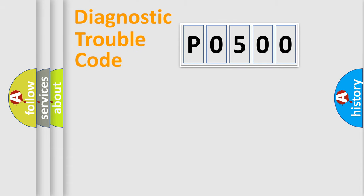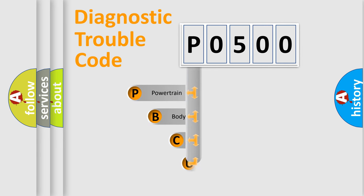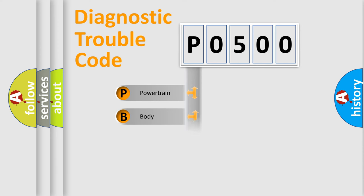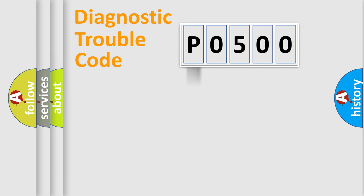First, let's look at the history of diagnostic fault code composition according to the OBD2 protocol, which is unified for all automakers since 2000. We divide the electric system of an automobile into four basic units: Powertrain, Body, Chassis, and Network.